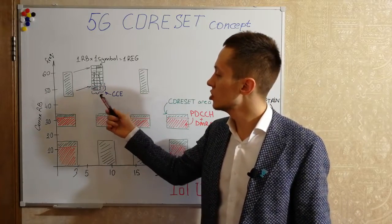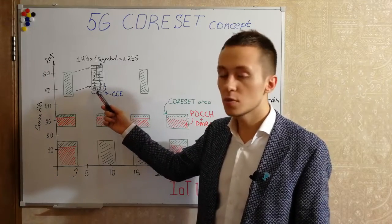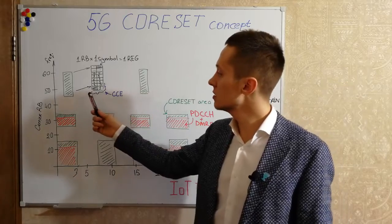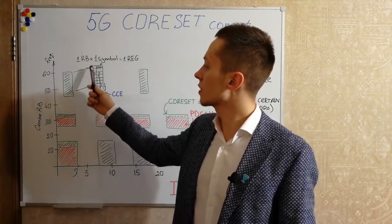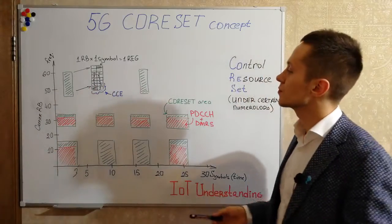And such resource groups we can combine in control channel elements as in LTE. And such elements may be again a few OFDM symbols, one, two or three, and a few resource blocks in frequency domain.